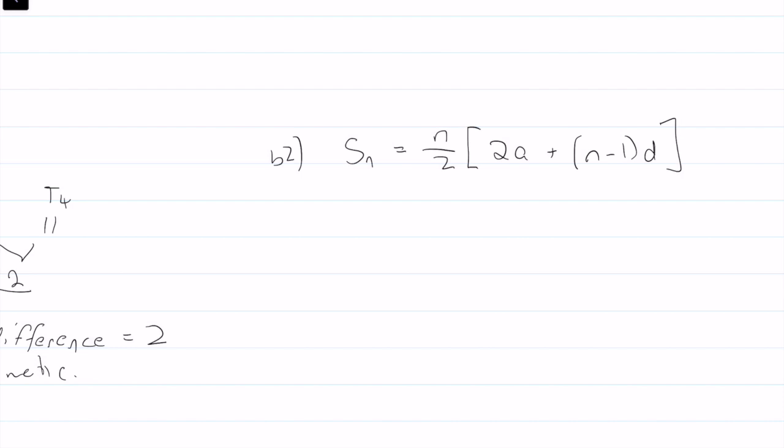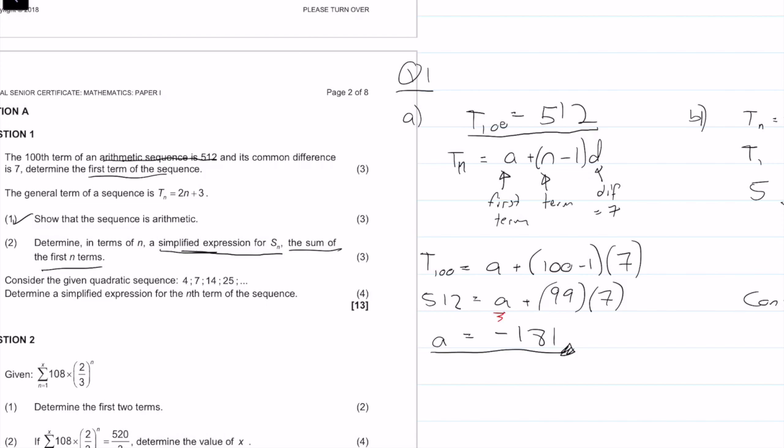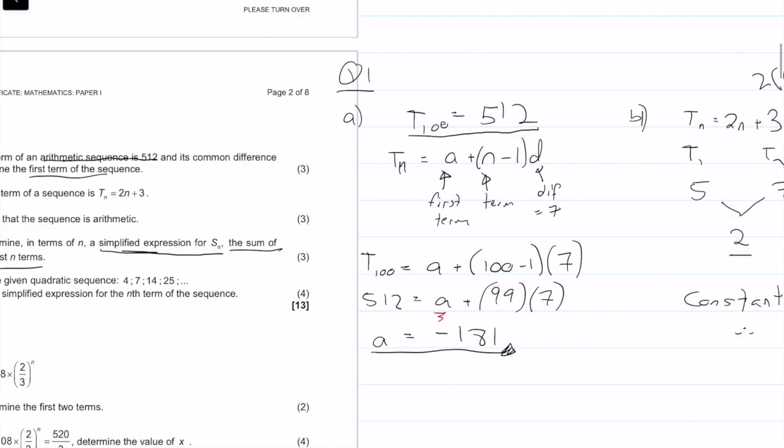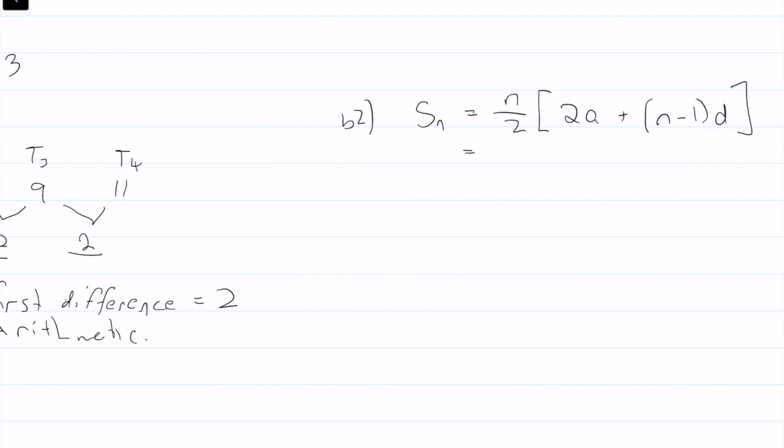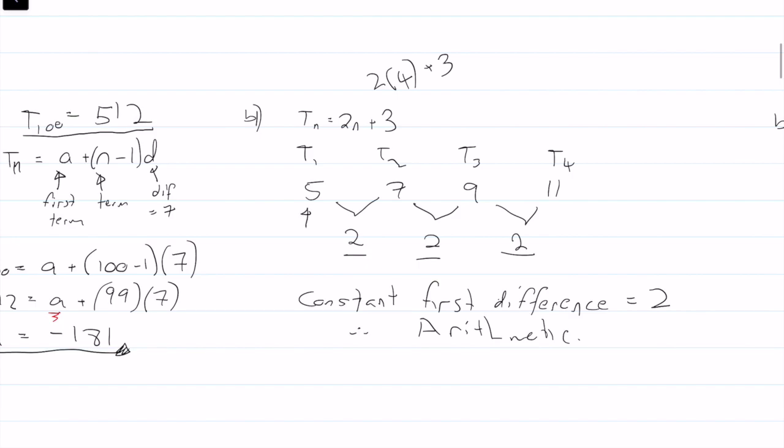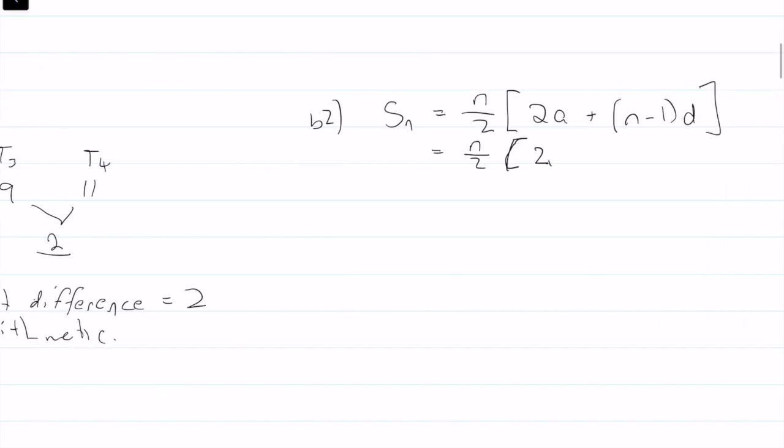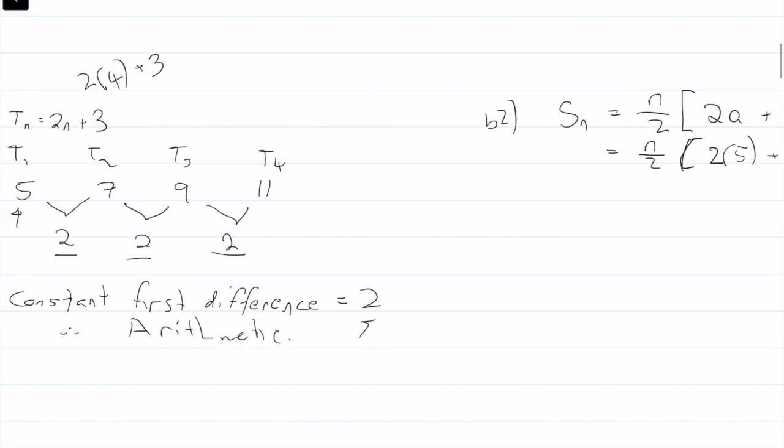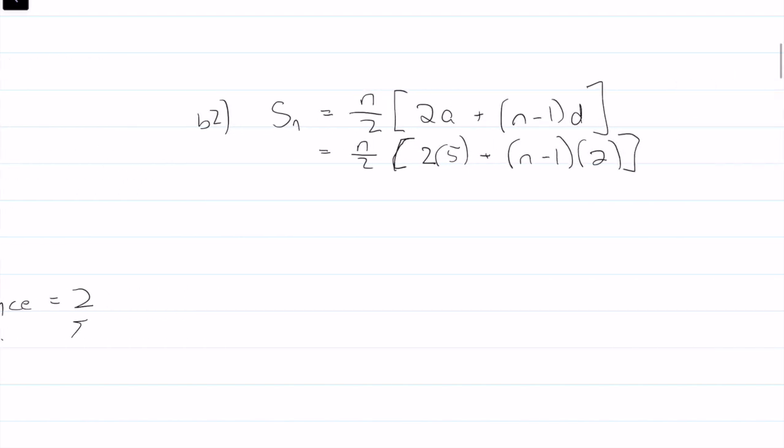Now we just need to fill in the blanks. Remember, we want this expression in terms of n. So the final answer must have the variable n. So I'm going to use that equal to n over 2. I'm going to leave that. 2 times a. We just need to look at the first term. So a is our first term, remember. So a is equal to 5 plus n minus 1. So I'm going to leave that n in there times the difference. And we just calculated the difference, which was 2. Then we can calculate that out. So that's n over 2. So that's 10 plus 2n minus 2, just multiplying through. So then we're left with n over 2. That's going to be 10 minus 2, which is 8 plus 2n.